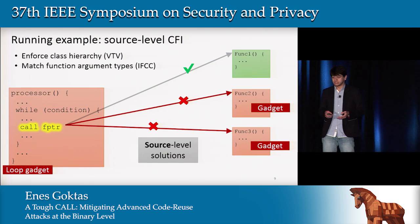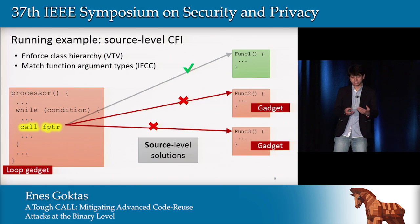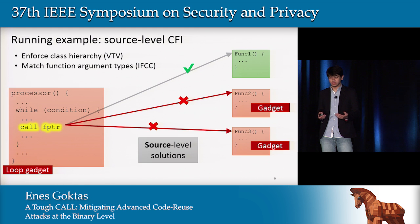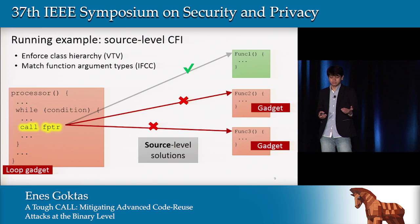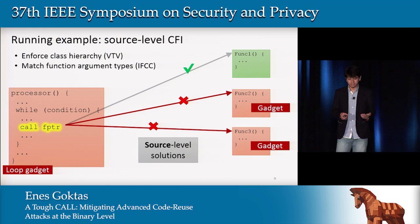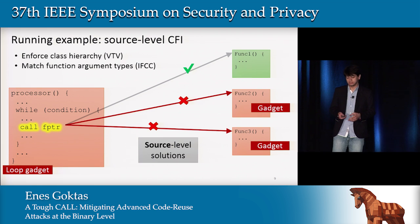At source level, you have all the information. You can extract the targets for all indirect calls and enforce this information during runtime. For example, VTV enforces the class hierarchy information to enforce this constraint at runtime and prevent the indirect call going to unintended locations like function 2 and function 3. IFCC does the same, but leverages function argument types available at source code.